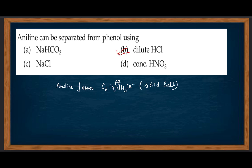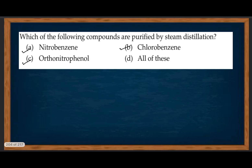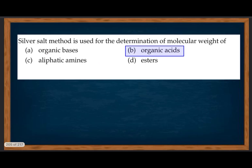Which of the following compounds can be purified by steam distillation? Nitrobenzene, chlorobenzene, ortho-nitrophenol — these can be purified by steam distillation. Next, silver salt method is used for determination of molecular weight of organic acids.